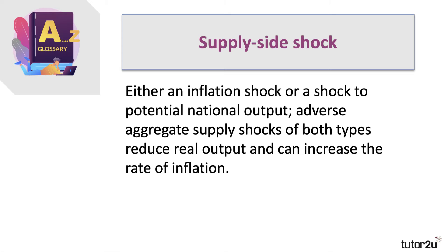A supply-side shock is either an inflation shock or a shock to potential output — both known as adverse aggregate supply shocks. Typically they cause an inward shift of short-run aggregate supply, causing an increase in inflation and a fall in real output. For example, increases in the price of world gas, oil, copper, and wheat could all be seen as supply-side shocks, though they are also demand-side shocks for the exporting nations concerned.